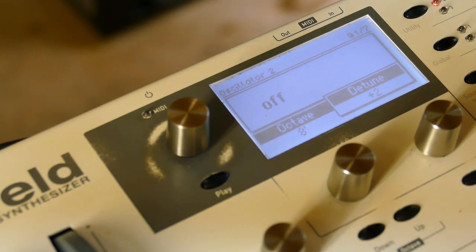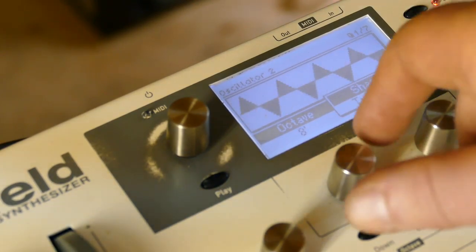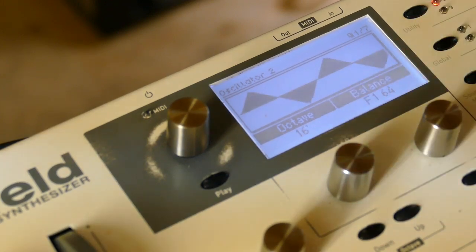Now let's add a second oscillator. Detune it up plus 2, take a triangle wave, bring it to 16 foot, take the volume down to about 48. Now the filter is still disabled. Soon that will change.